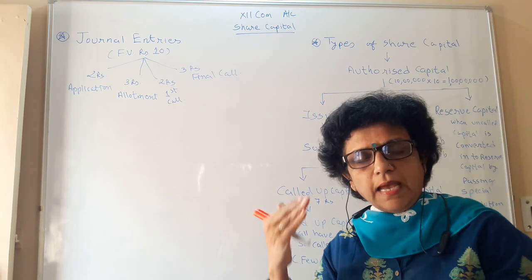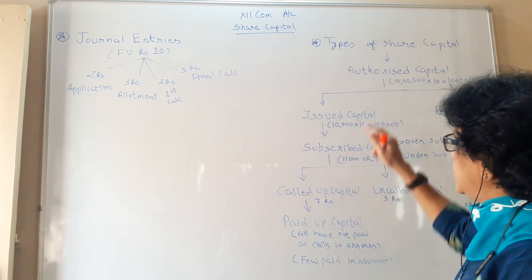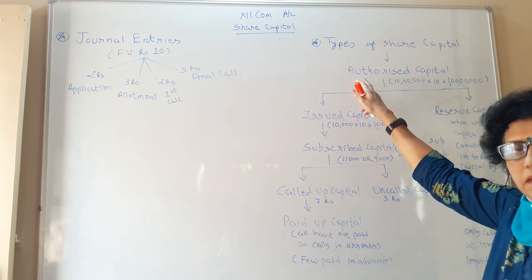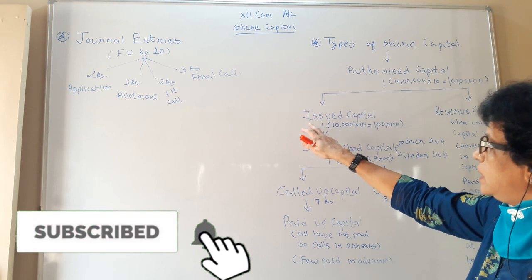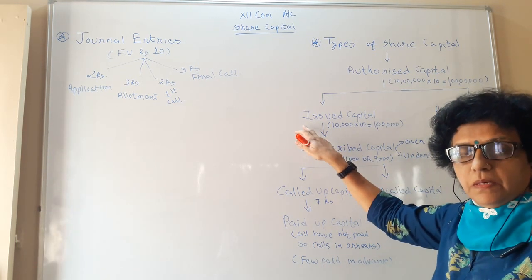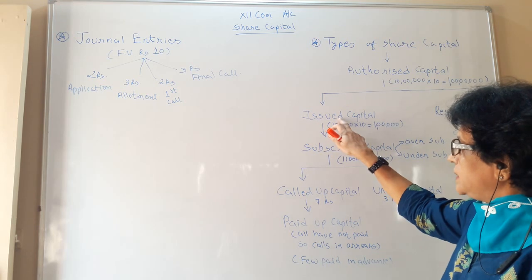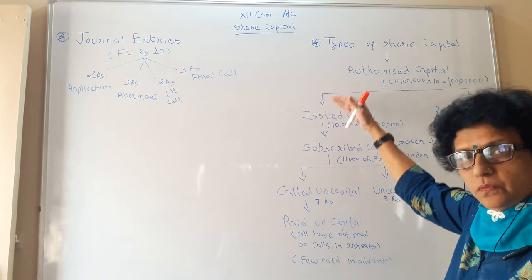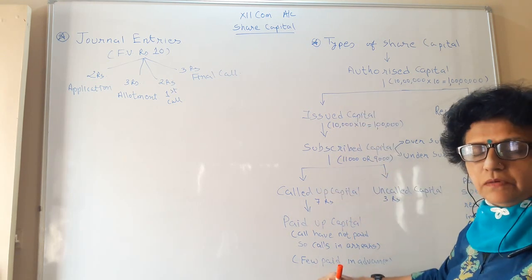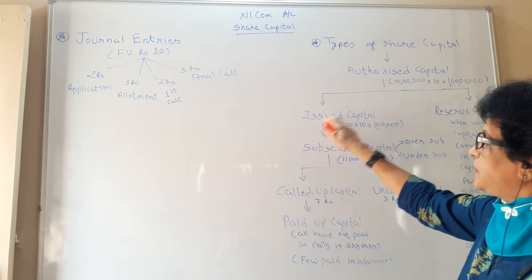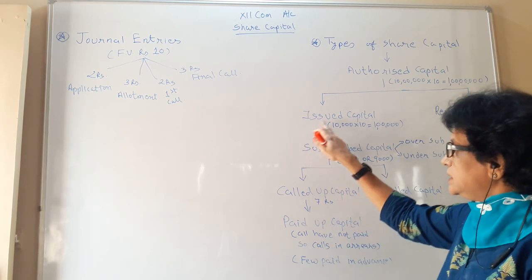You cannot collect as much money as you want — you have to have permission and authority for that. So that is nominal capital, also called authorized or registered capital. Now out of this total authority, when you actually put a part of capital into the market for public subscription, that is called issued capital. Issued capital is always a part of authorized capital and always less than or equal to it.